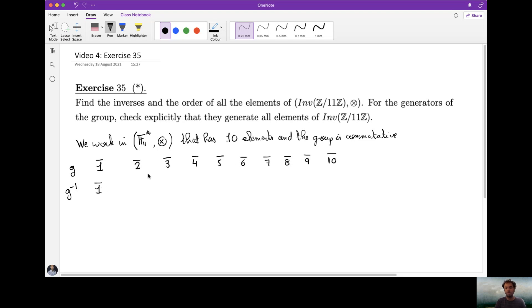Let me show you how I do this. For example, for 2, I can notice that 2 times 5 is 10, right? So it's minus 1 and therefore 2 times minus 5 is 1. So the inverse of 2 is minus 5, minus 5 is 6. So the inverse of 2 is 6, and therefore the inverse of 6 is 2. Let us continue like this.